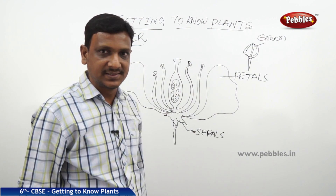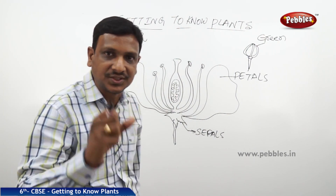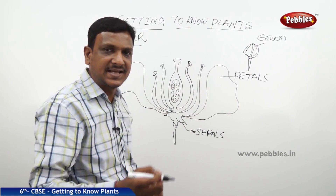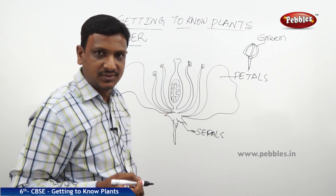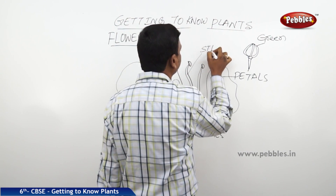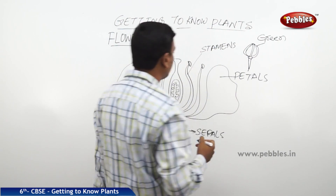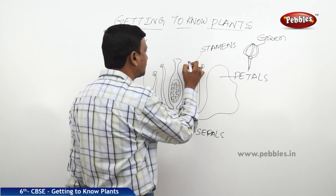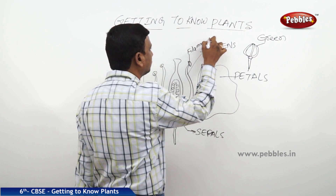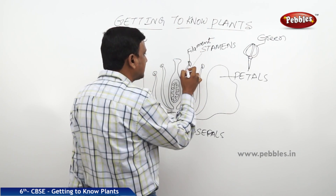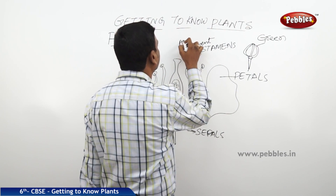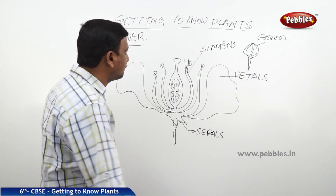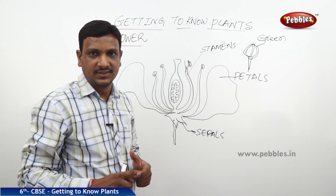Inside the petals, there are some interesting structures. You find some stick-like, stand-like structures — finger-like projections. This whole thing is called a stamen. The stamen itself has got two parts: the top part is called the filament and the bottom one is called the anther. The anther and filament together are called a stamen.